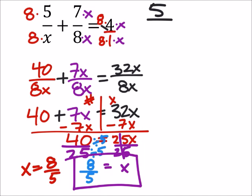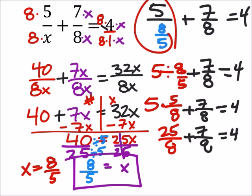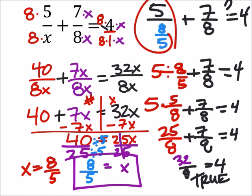Let's go ahead and check this: five divided by eight-fifths — now this is a complex fraction, so we're going to have to do some work with that — then we add seven-eighths, and that should equal four. What we have is five divided by eight-fifths, but we're going to reciprocate that fraction and make it five times eight-fifths, so that would be twenty-five eighths. We were always adding that seven-eighths, and it should equal four. So twenty-five plus seven gives us thirty-two over eight — does that equal four? Yes, that's a true statement, so we know our answer is correct.